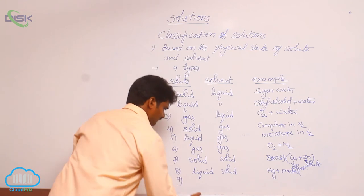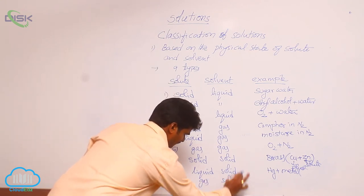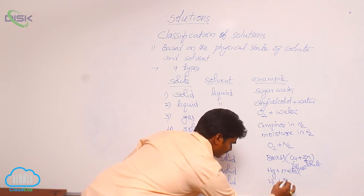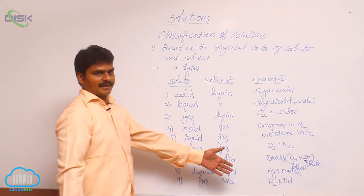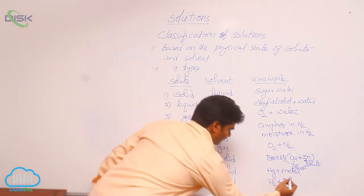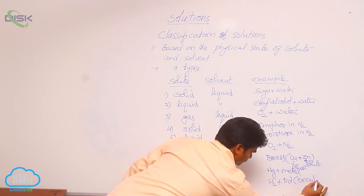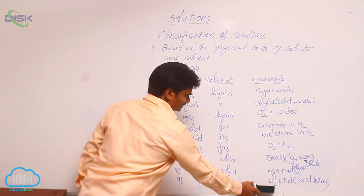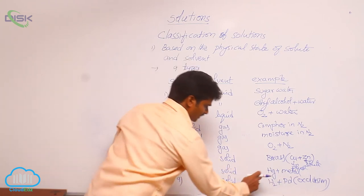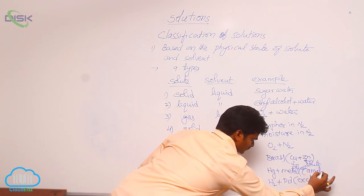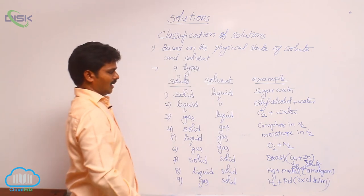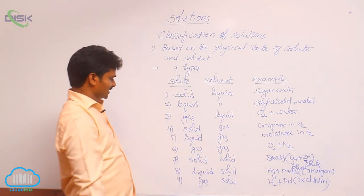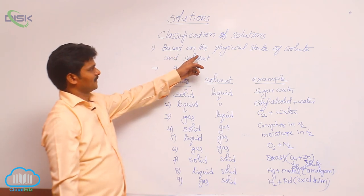The last one, gas in solid. For this example, hydrogen gas plus powdered palladium. You know, a gas over a solid powder is called occlusion. So in occlusion, solute is gas, solvent is solid. This mercury and metal combination is called amalgam. So in amalgam, mercury is solute and metal is the solvent. So these are the nine types of solutions classified based on the physical state of solute and solvent.